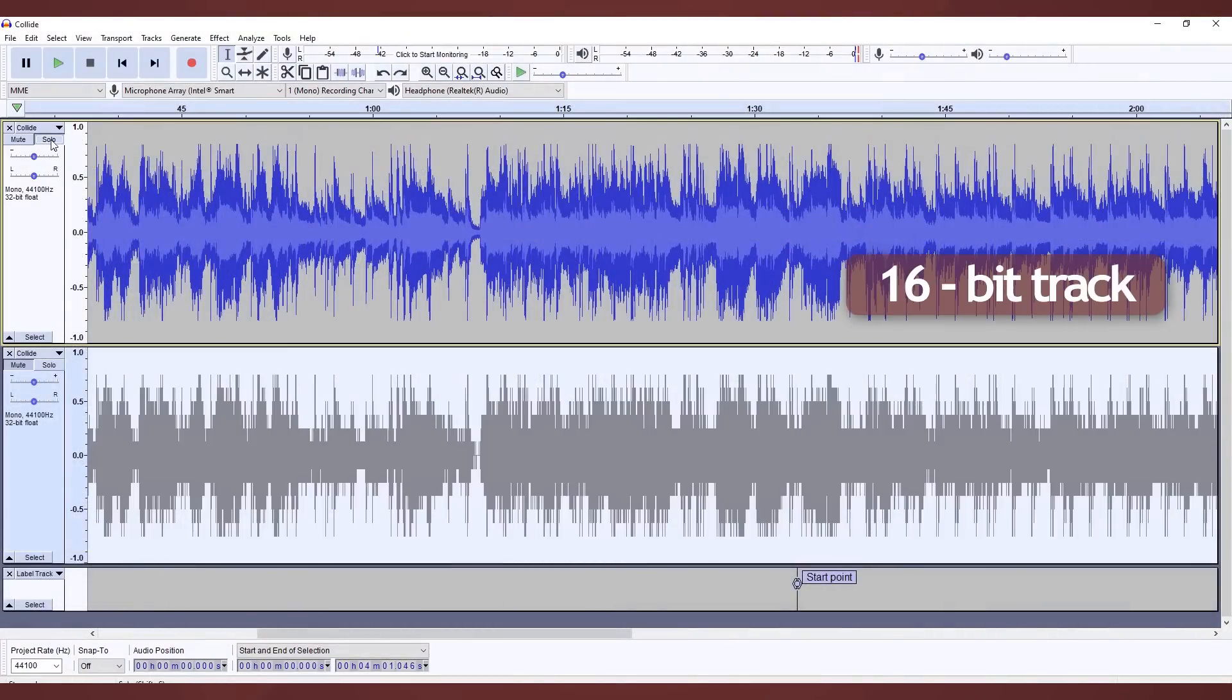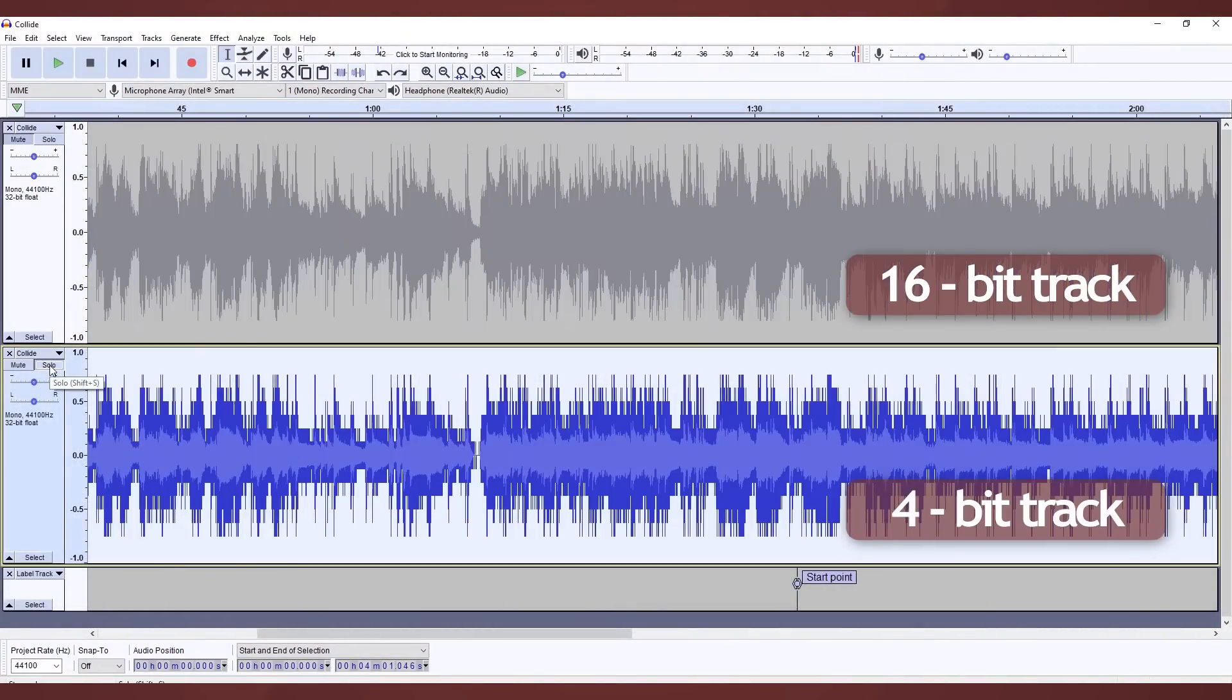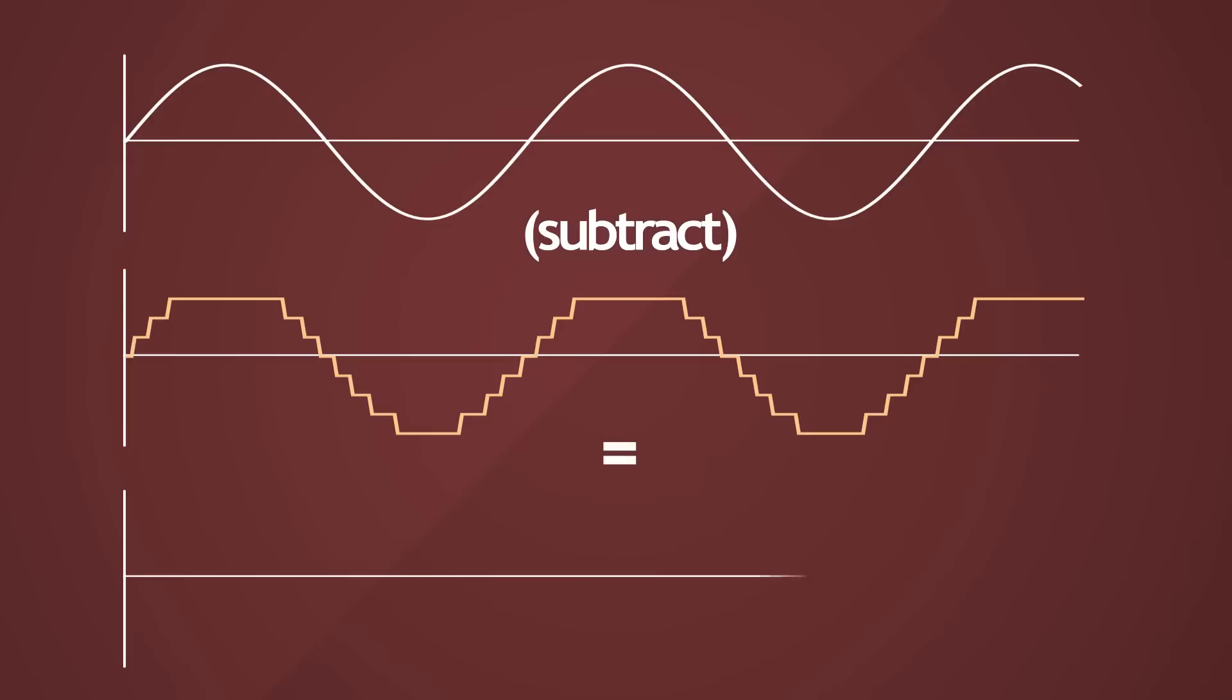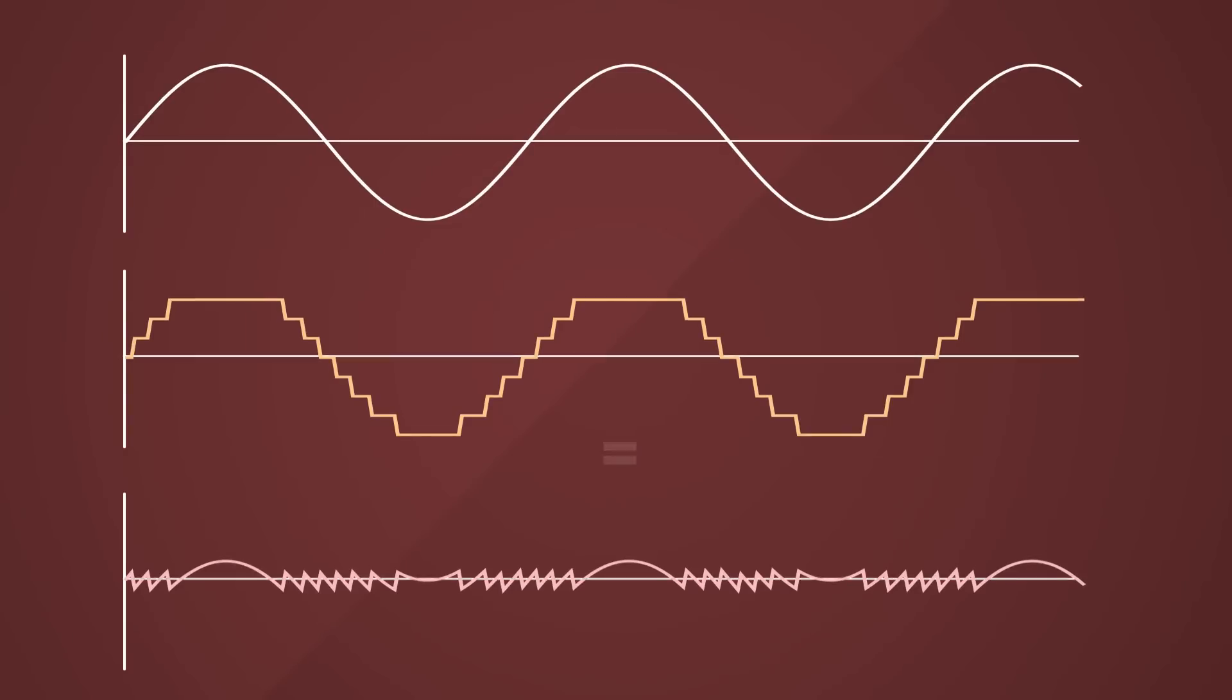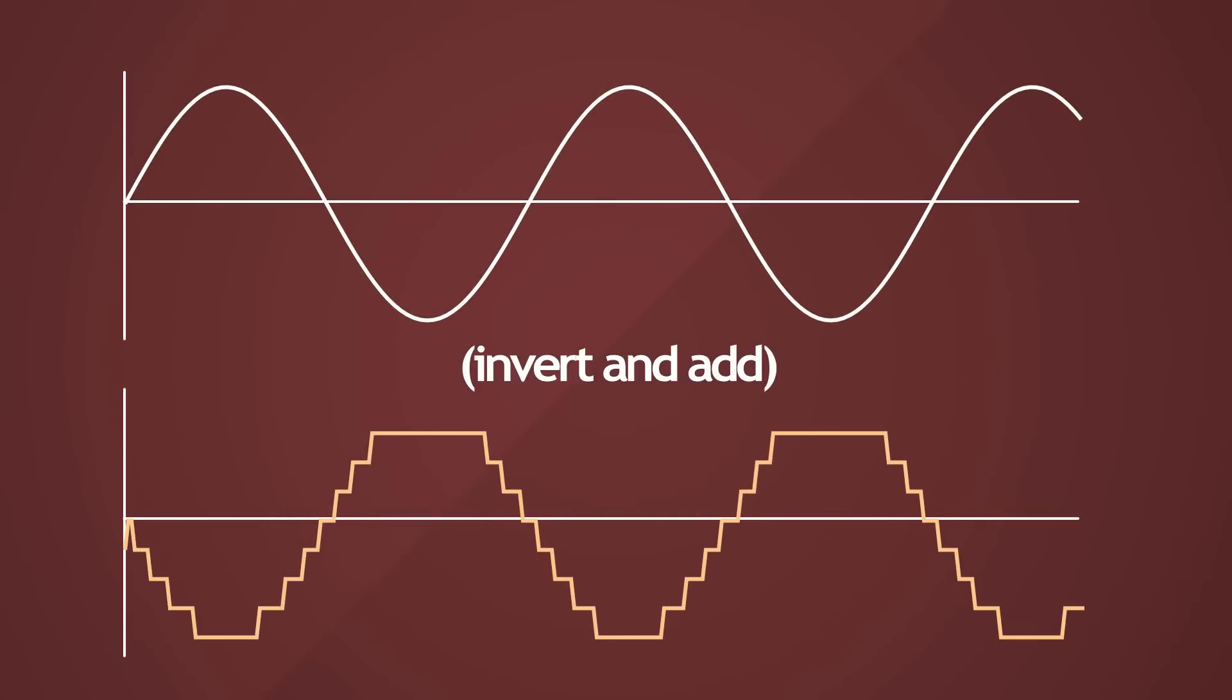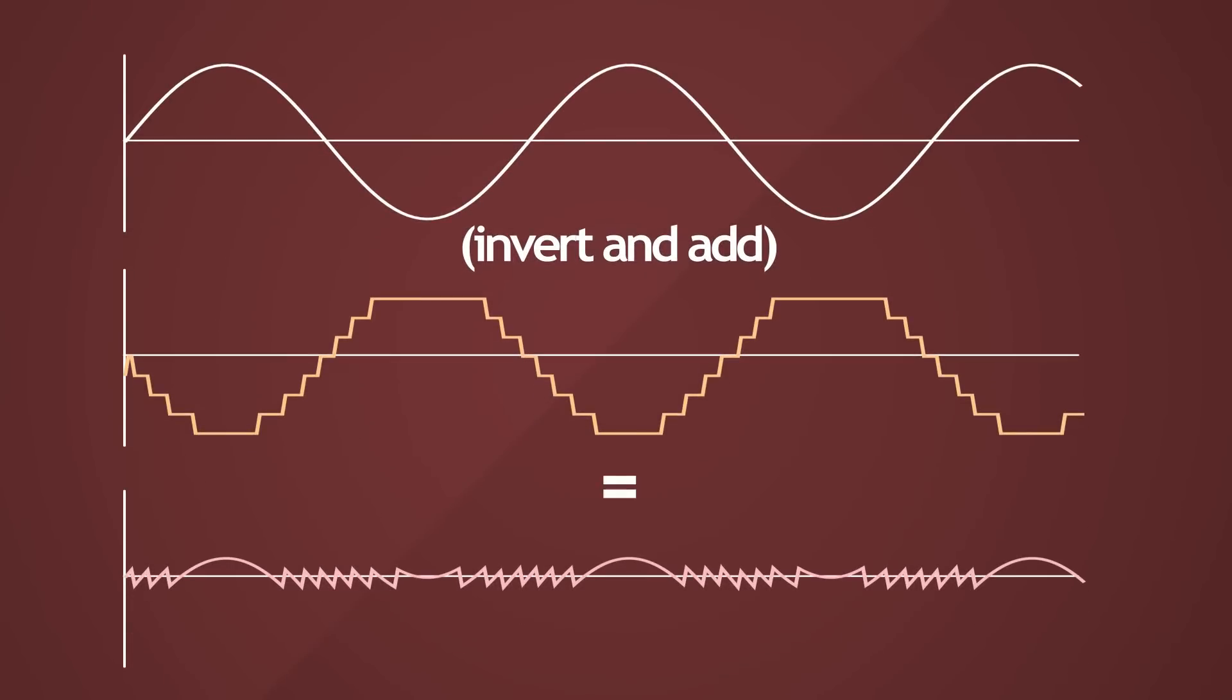Here's the original, and here's the low resolution render. Let's try to extract just the noise element. We can technically do this by subtracting one track from the other. Over here in Audacity, there's no subtract option, but what you could do is invert the phase of one of the tracks, and add the two together. It's essentially a subtraction operation.